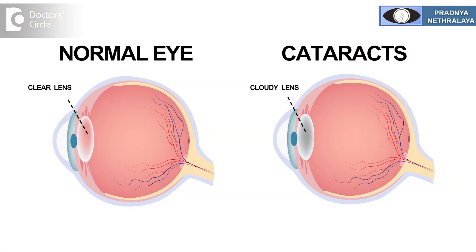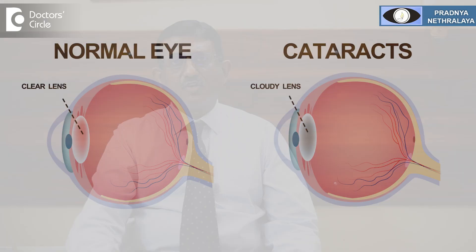Pediatric cataract. Children are born with a clear human lens. If the lens in a child becomes cloudy, it is called a pediatric cataract.